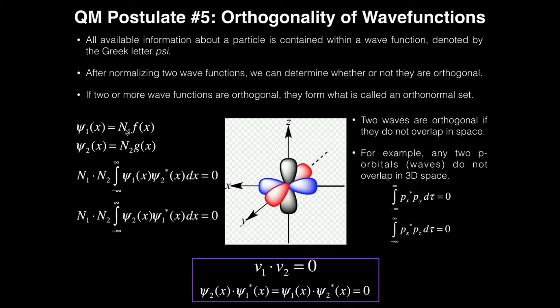But these normalization constants, N1 and N2, are not necessarily the same. So you can't just take one of them and square it. You have to take the two separate normalization constants.